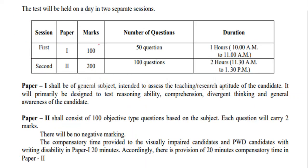The test will be held on one day in two separate sessions. Session 1 is related to Paper 1 — Teaching, Aptitude, and Research Attitudes — and Session 2 is related to your subject. Paper 1 has 50 questions, each carrying two marks, for a total of 100 marks. Paper 2 has 100 questions for 200 marks. The total exam duration is three hours. The timing is 10:00 to 11:00 for Paper 1 and 11:30 to 1:30 for Paper 2. There is no negative marking.